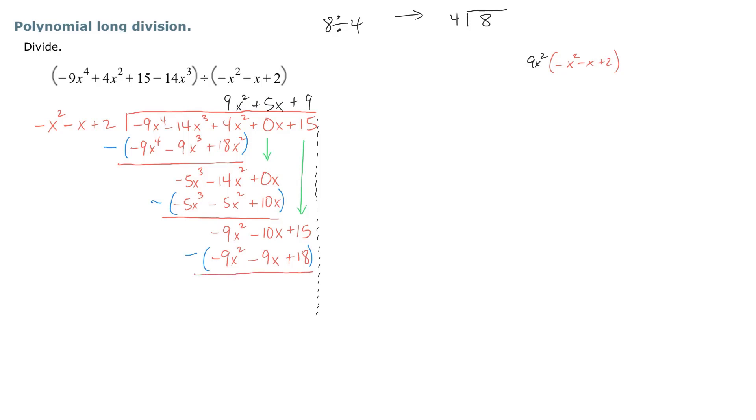And notice we hit our finish line. Now we have a remainder of negative x minus 3. So remember, up on top right here is the quotient. And this is the remainder. How do we write our final answer?